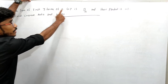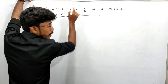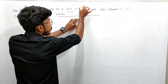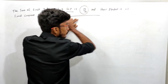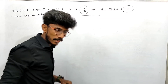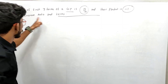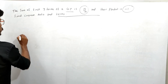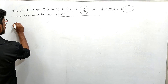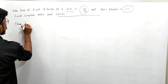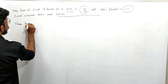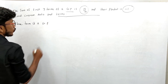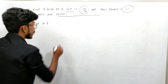The sum of the first three terms of a GP. In a geometric progression, the sum of the 3 terms is 13 by 12, and the product is minus 1. We need to find the common ratio. So the 3 terms of a GP are given.